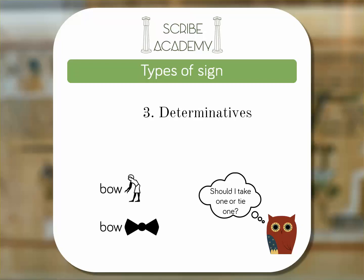Let's put some determinatives in. You can see how the determinatives help to clarify the meaning of the word — the top one with the bowing man must be 'bow,' and the bottom one with the bow tie, 'bow.' Also, because the Egyptians didn't put spaces between their words, determinatives not only help identify the meaning of a word but can be great for seeing word breaks.